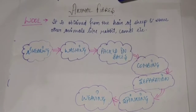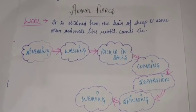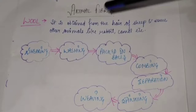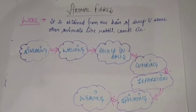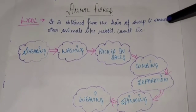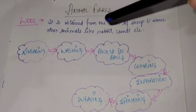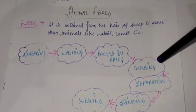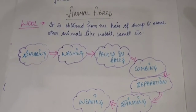Animal fibers mainly comprise of wool and silk. Wool is a very common animal fiber which is obtained from the hair of sheep and some other animals like rabbit, camel, etc.